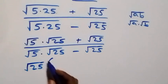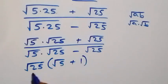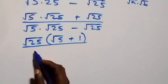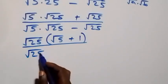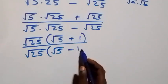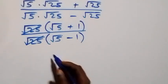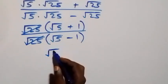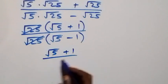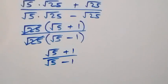From here, root 25 is common in the numerator, so we take root 25 out into a bracket: root 5 plus 1. Also here, root 25 is common in the denominator, so we have root 25 out into bracket: root 5 minus 1. The root 25 terms cancel each other, giving us (root 5 plus 1) over (root 5 minus 1). We can rationalize this.